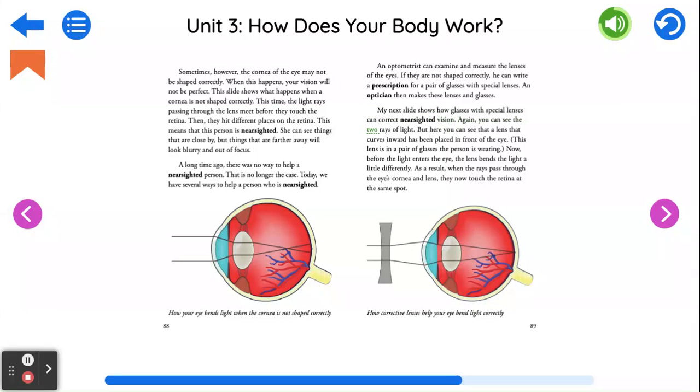Again, you can see the two rays of light. But here you can see that a lens that curves inward has been placed in front of the eye. This lens is in a pair of glasses the person is wearing. Now, before the light enters the eye, the lens bends the light a little differently. As a result, when the rays pass through the eyes, cornea, and lens, they now touch the retina at the same spot.